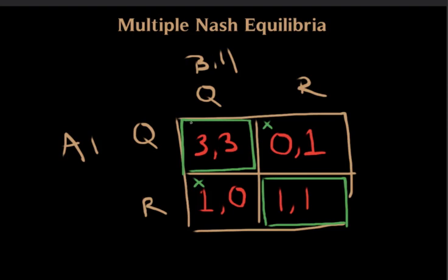Now you might be asking, what will actually happen in a situation like this? Well, what will happen is actually unknown because there are two Nash equilibria and they are both legitimate ways for players to play this game.